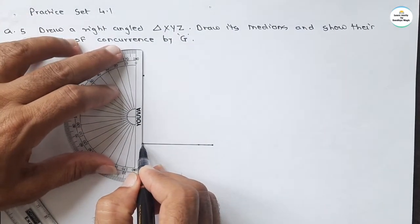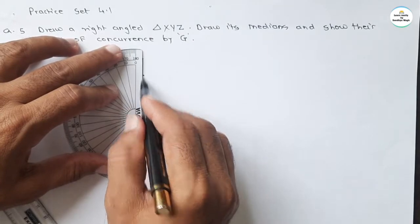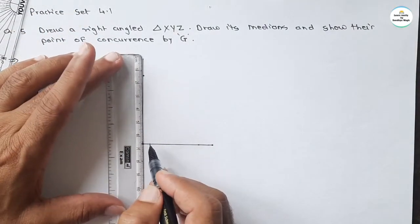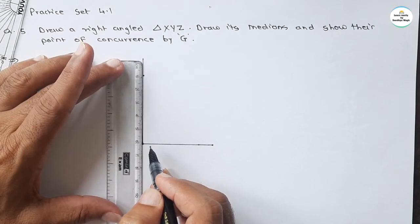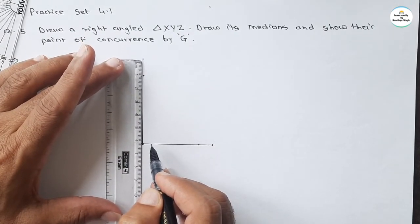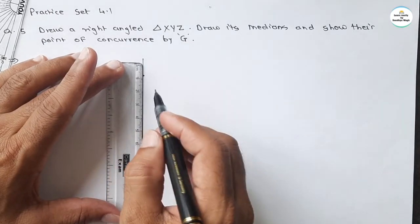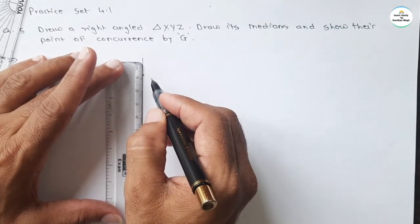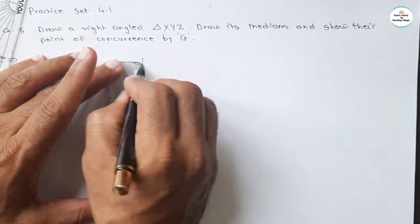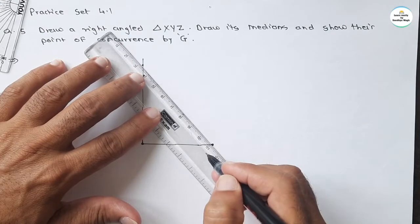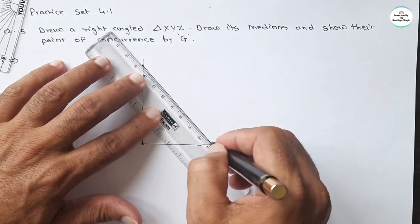And join these points, so this will be the right angle triangle. Take sufficient distance, let it be six centimeters. And join this point, these three points. You will get a right angled triangle.